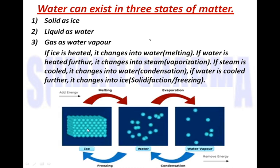If ice is heated or kept at room temperature when you take it out from the freezer, it changes into water by absorbing heat energy from surroundings. This process of conversion of ice into water — solid into liquid — by absorbing heat is known as melting. If water is further heated, it changes into steam, and this process of conversion of liquid into gas is called evaporation, vaporization, or boiling.